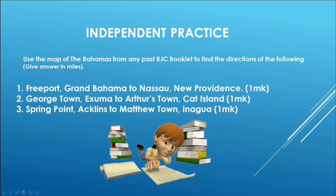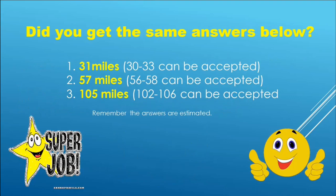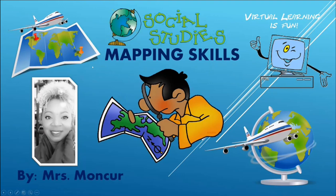Use the map of the Bahamas from any past BJC booklet to find the distances of the following: number one, Freeport, Grand Bahama to Nassau, New Providence in miles; number two, Georgetown, Exuma to Arthurstown, Cat Island; and number three, Spring Point, Acklins to Matthew Town, Inagua. This is a perfect opportunity to pause this video as you work independently. I am certain you did a super job — check the answers below. Remember, the answers may be estimated. I hope you had a wonderful time learning social studies with me. Remember to study smart and not hard. I'll see you soon!